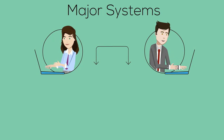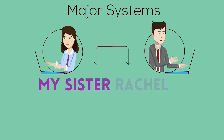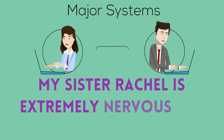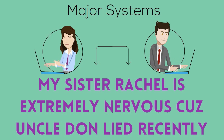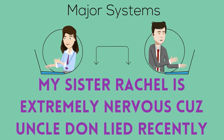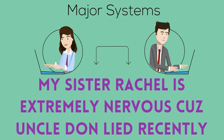If you don't like that one, you can try: 'My Sister Rachel Is Extremely Nervous Because Uncle Don Lied Recently.'